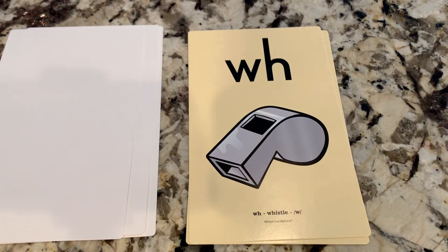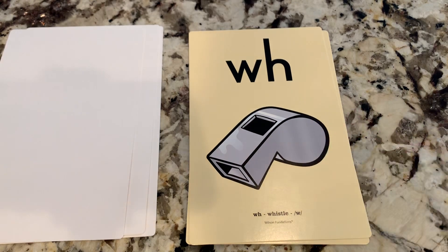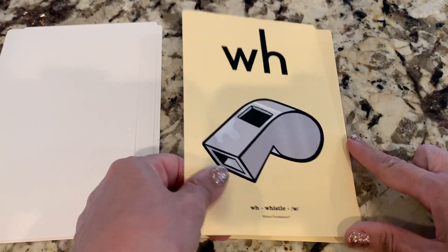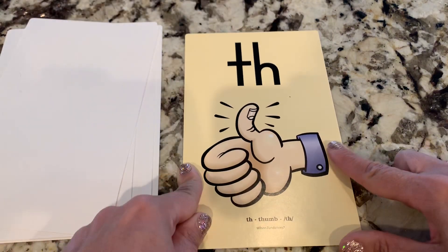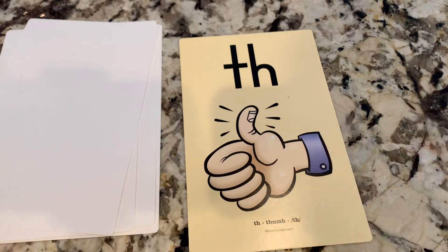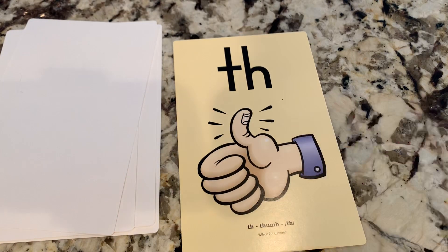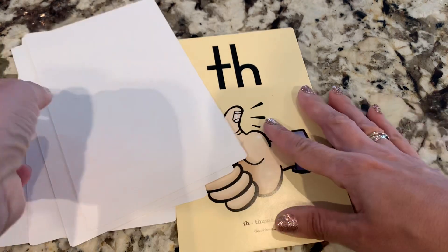WH we would find at the beginning of a word. So this is a whistle. A lot of sight words start with WH, like 'where', 'what', 'when'. So we would see WH at the beginning of a word. And then TH we would see at the beginning or the end of a word. So over here we see a thumb — it's at the beginning of the word, 'thumb'. But then we might see the word 'with', and that would have the TH at the end. So those are our digraphs.